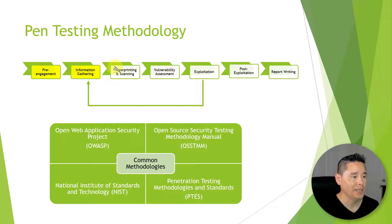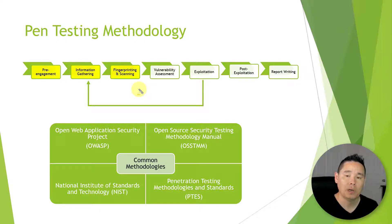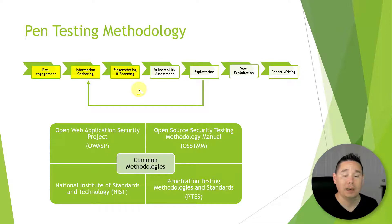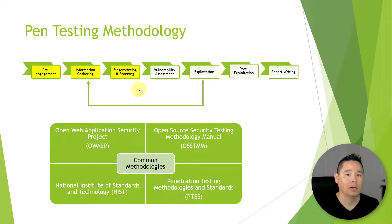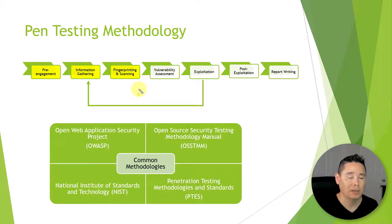When we move on to the next step, called fingerprinting and scanning, think of this as active reconnaissance. This is where we're starting to actually scan the system — doing things such as port scans, scanning the network, using tools such as NMAP — and learning about the network and systems: what ports are open, what the operating systems are, the makeup of the network, subnets, and addressing schemas.